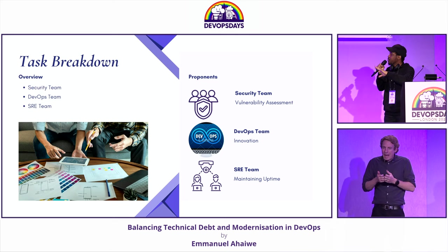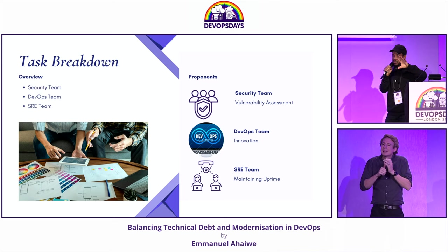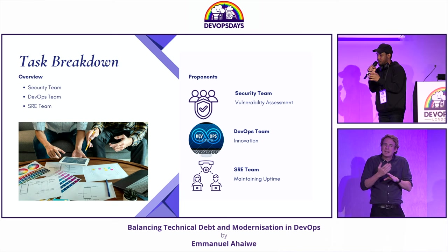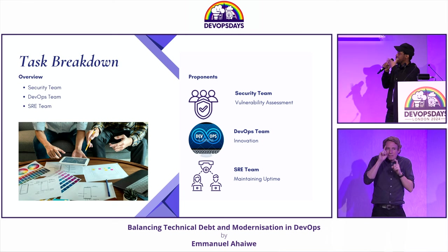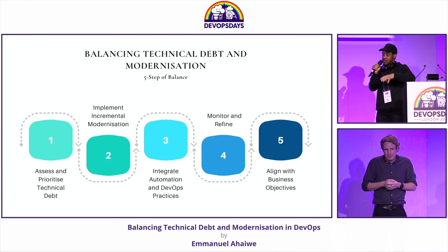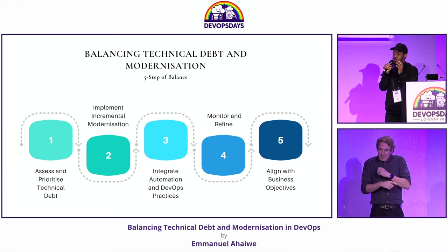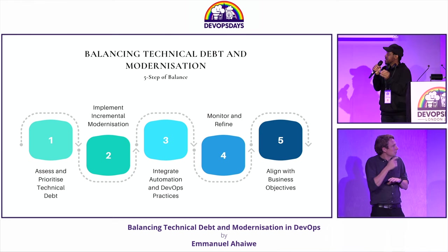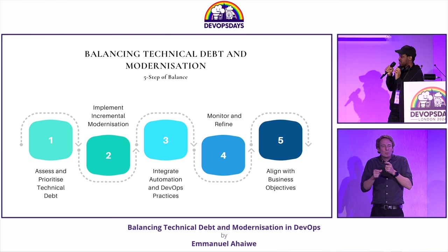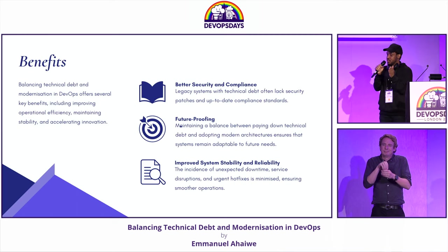The breakdown of how you approach it: on an infrastructure level, you deal with the security team for vulnerability assessment, the DevOps team for innovation and modernization, and the SRE team to maintain uptime. You assess, you prioritize the technical debts, you implement incremental modernization using an incremental refactoring process, and then you integrate this into the DevOps flow.